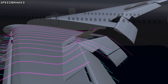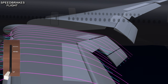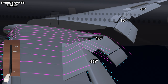Deflecting all spoilers to their maximum in flight can be dangerous. Therefore, the flight computer restricts spoiler deflection in flight. Spoilers 5 and 10 are not used as speed brakes in flight. Outboard spoilers are restricted to a maximum 45-degree deflection, and inboard spoilers to 15 degrees. In flight, the speed brakes can be used to reduce airspeed, and can also help the aircraft descend for approach.